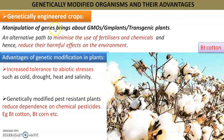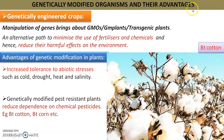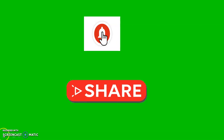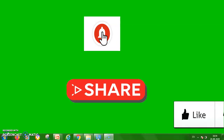Last but not least, we will talk about BT cotton — Bacillus thuringiensis — a cotton plant introduced with the gene for creating a toxic protein to kill pests. We will discuss this in detail in the next video. Thank you, keep learning.